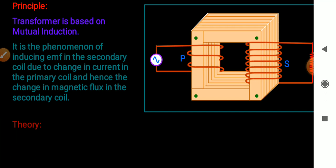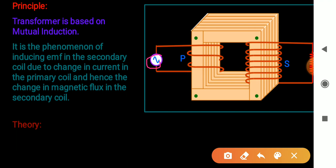The AC mains is always connected to the primary coil. When alternating current flows through this primary coil, in each cycle of current the core is magnetized once in one direction and once in the opposite direction. So an alternating magnetic flux is produced in the core. Since the secondary coil is also wound on the same core, the magnetic flux passing through it changes continuously due to repeated magnetization and demagnetization of the core. By mutual induction, an alternating EMF of the same frequency is induced in the secondary coil.